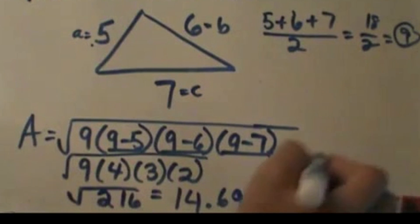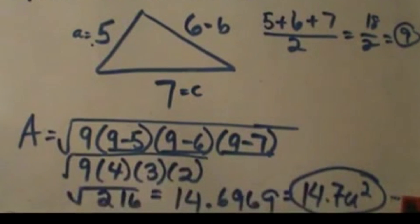We don't have any units on it, so we're just going to call that square units. And that is how you use Heron's formula to find the area.